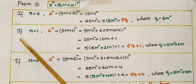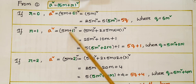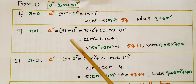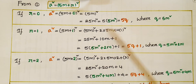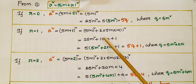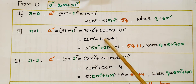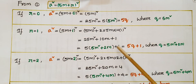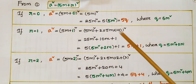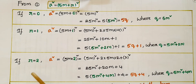If r is equal to 1, a squared equals (5m plus 1) whole square. This is in the form of (a plus b) whole square, that is a squared plus 2ab plus b squared. So that equals 25m squared plus 10m plus 1. Taking out 5 as common: 5 into (5m squared plus 2m) plus 1, which is 5q plus 1, where q is equal to 5m squared plus 2m.